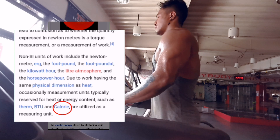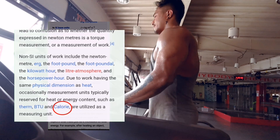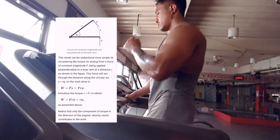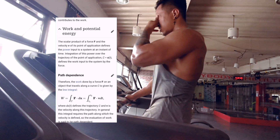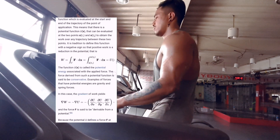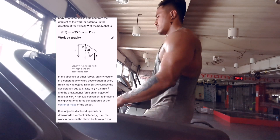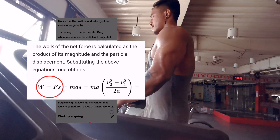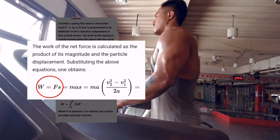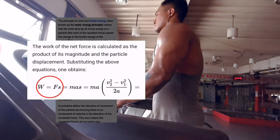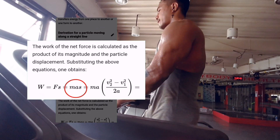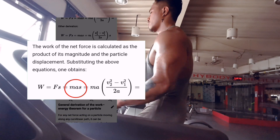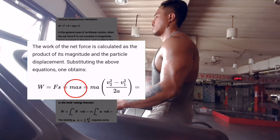In physics, work is the product of force and displacement — displacement being the distance you cover in a certain direction. Work or energy has the unit we all know as the calorie. The most simple formula is: work equals force times displacement. You can also say work or energy equals mass times acceleration times the distance covered.